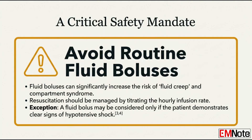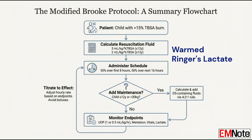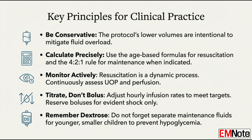And finally, what is the significant, often catastrophic complication that this whole conservative strategy is designed to prevent? The primary severe complication we are trying to avoid is burn-related compartment syndrome. This is a direct consequence of massive tissue edema from excessive fluid volumes — it can lead to irreversible nerve and muscle damage and often requires a fasciotomy. The Modified Brooke Protocol's lower fluid volumes directly address this risk. You have to remember those two critical tracks: age determines initial resuscitation volume — 3 milliliters versus 2 milliliters per kilogram per percent — and weight determines urine output goals: 1 milliliter versus 0.5 milliliters per kilogram per hour.